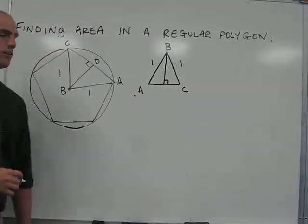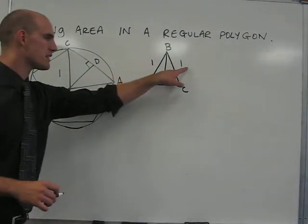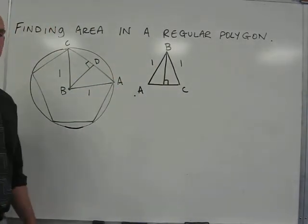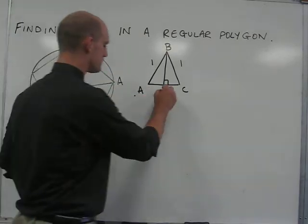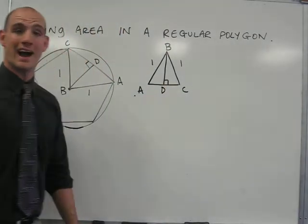When we redraw this triangle, we understand that the two legs of the triangle are one. And the apothem that is drawn here, BD, will give us the height of the triangle.